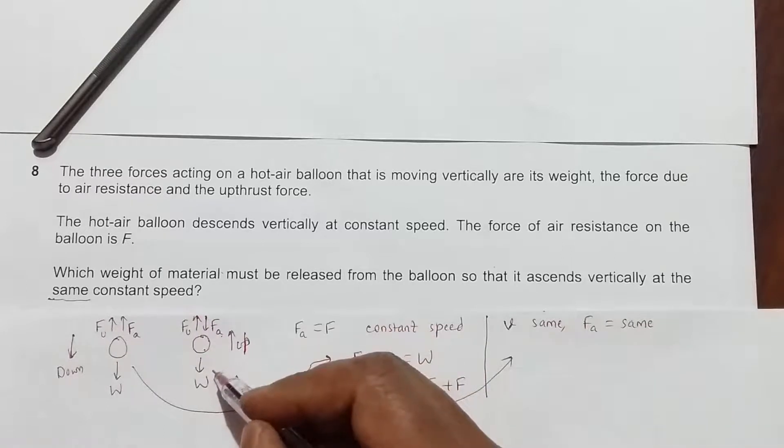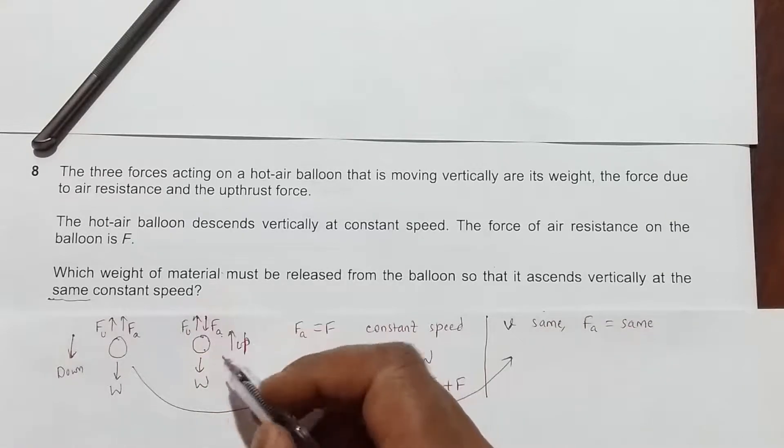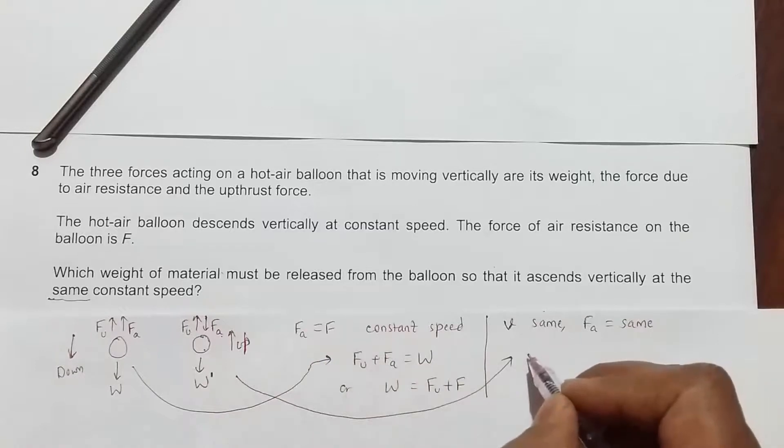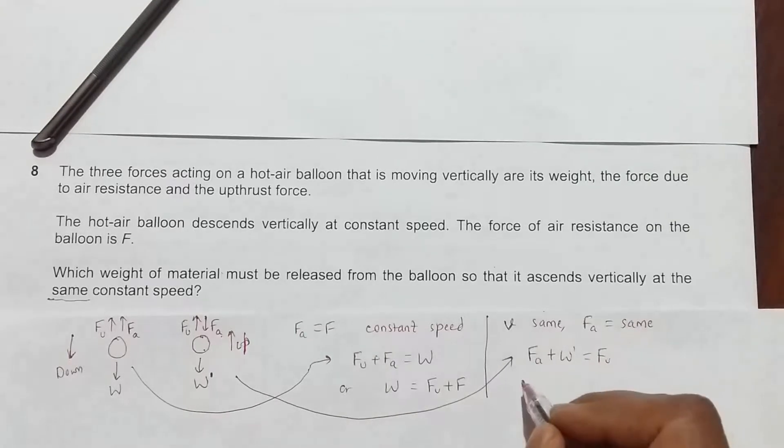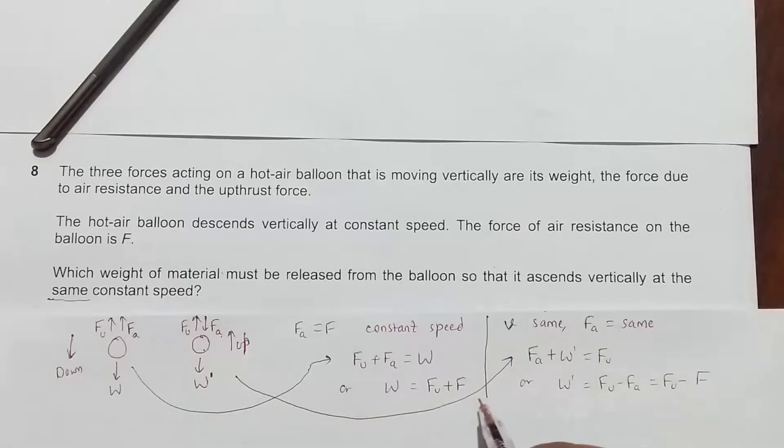For this case, F_A and W are acting downward, and since we have taken off some weight of material, the weight now will be W prime. So we must have F_A plus W prime equals F_U, which gives us W prime equals F_U minus F_A.